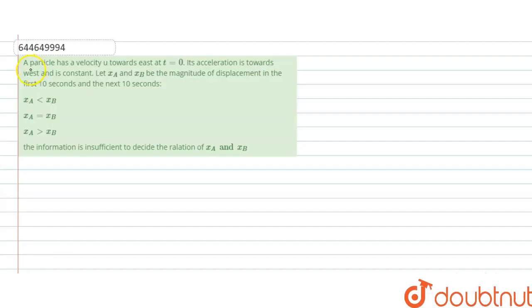We have a question: if a particle has velocity u towards east at t equals 0, its acceleration is towards west and is constant. Find the magnitude of the displacement in the first 10 seconds and the next 10 seconds, x_a and x_b.